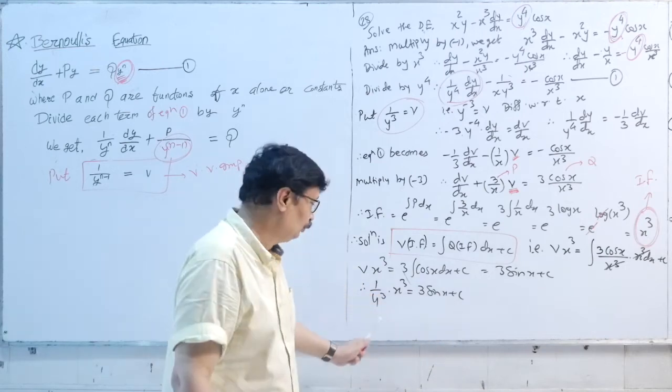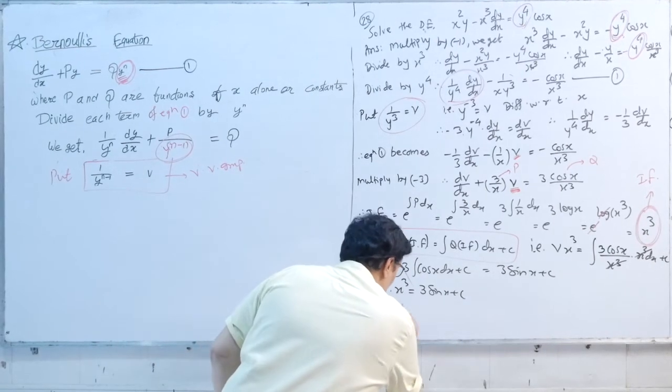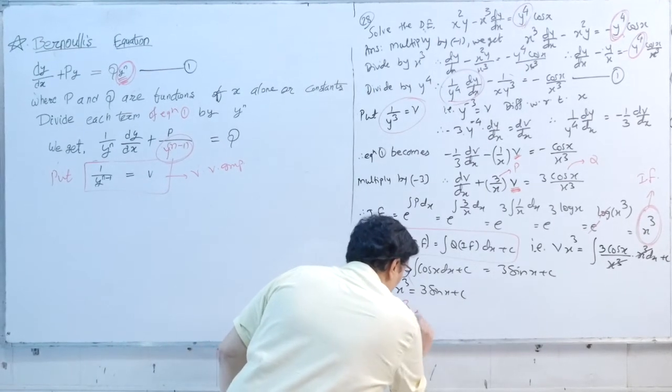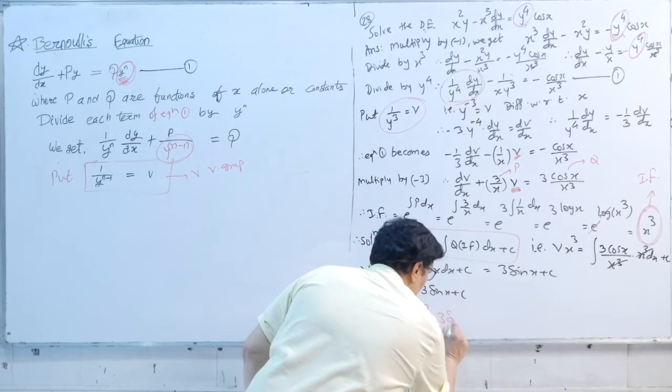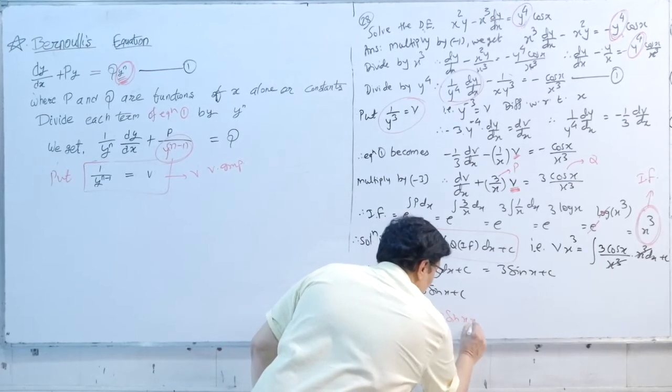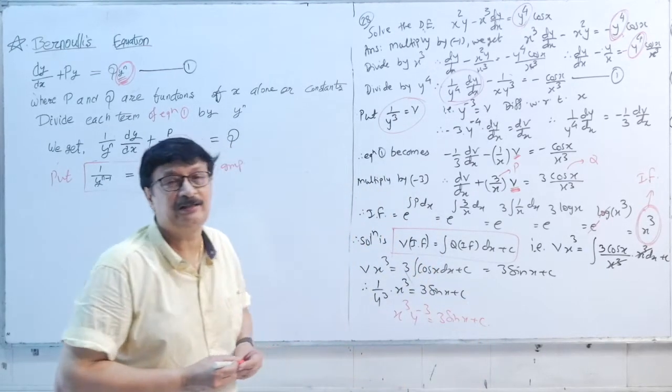We may also write x³·y^(−3) = 3·sin(x) + c as the final answer.